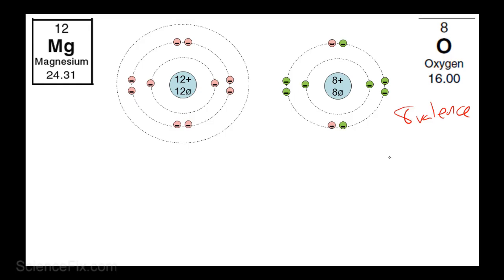So now oxygen has 8 valence electrons in the outermost energy level, and magnesium, as a result of having 0 valence electrons in this third energy level, basically that energy level now does not exist anymore. So the second energy level is the outermost energy level now. So it has a full set of 8 valence electrons. So now they're both stable.